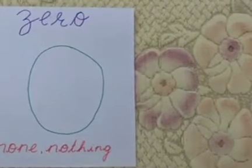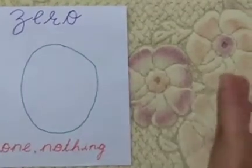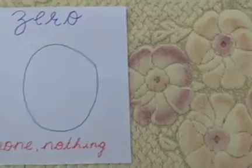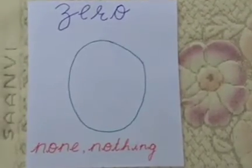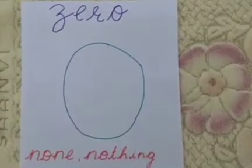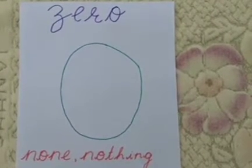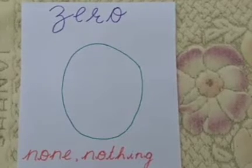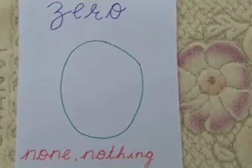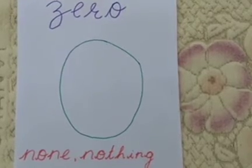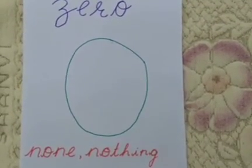I think now you have understood the concept of zero. Zero means nothing. I have nothing. I have none left with me. I want you to revise this concept at home by counting different objects and removing one object at a time until you come to the number zero. Happy learning. Thank you.